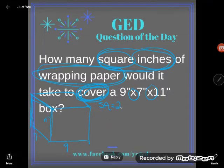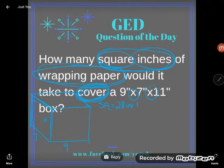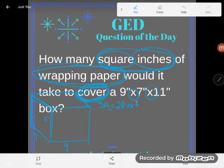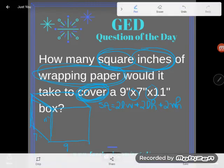2LW, meaning two times the length times the width. That makes sense because there's two rectangles there of dimension length times width, plus 2LH, the two rectangles of length times height, plus 2WH, the two rectangles of width times height. Now this might look like an ugly formula, but your calculator